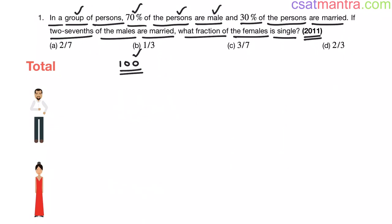So, we have 100 people in a group. There are 70 males and 30 females. Now, 30% of the persons are married. 30% of total number of people, that is equal to 30. So, we have 30 married people in total.